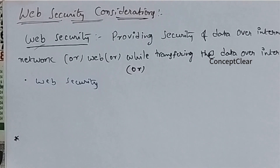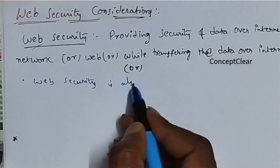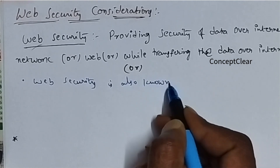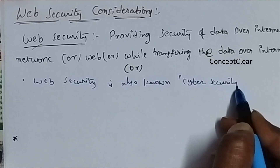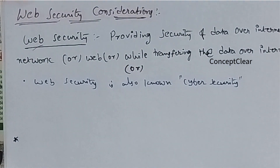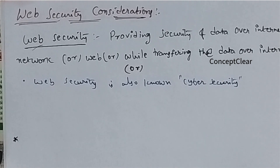We have to protect our data on the internet — that is called web security. Web security is also known as cyber security. It is basically protecting a website or web applications by detecting, preventing, and responding to cyber threats. Protecting a website or web applications by detecting, preventing, and responding to cyber threats is called cyber security.